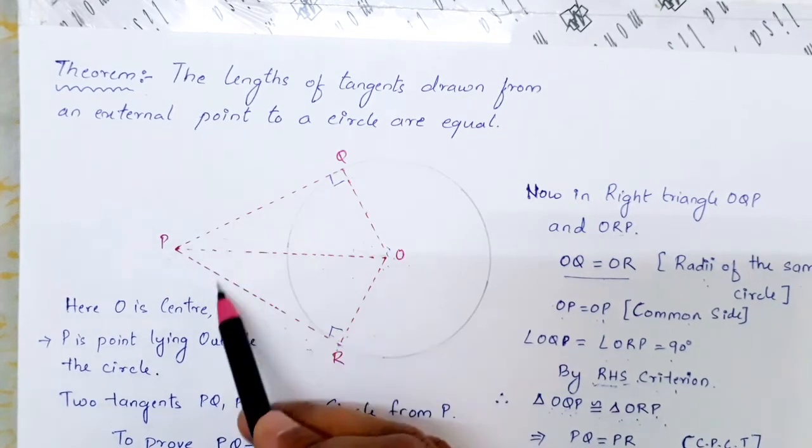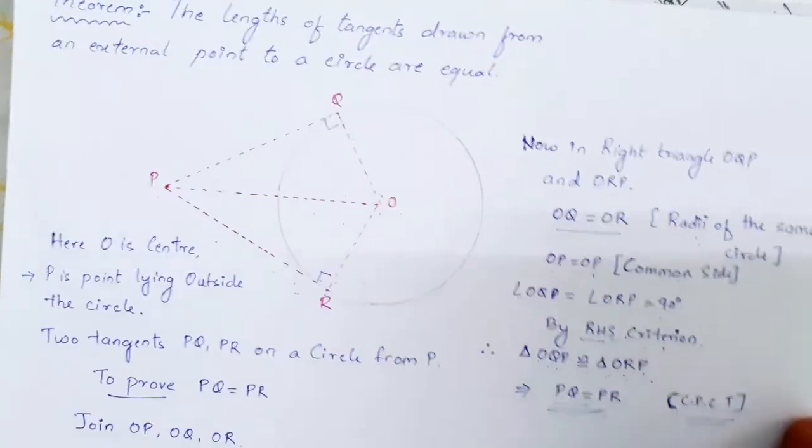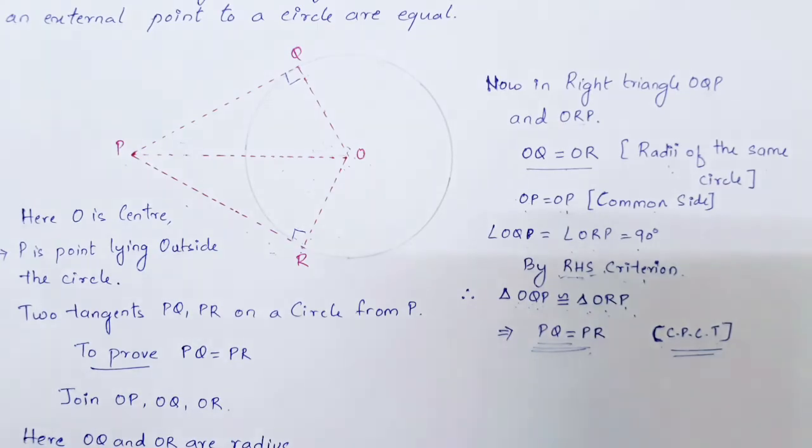So PQ is equal to PR means the tangents which are drawn from the external point P are both equal. Hence, this is the proof. Thanks for watching.